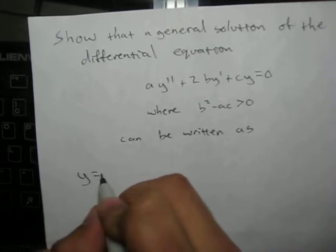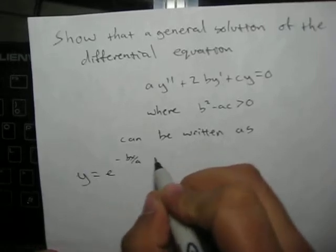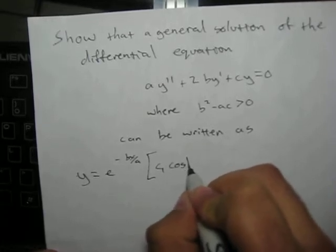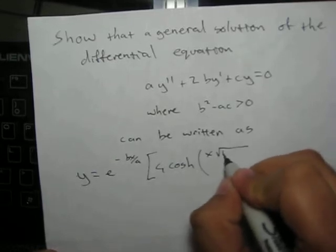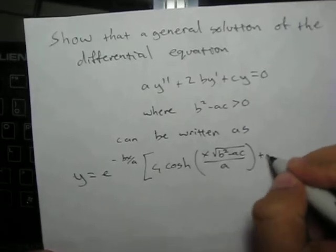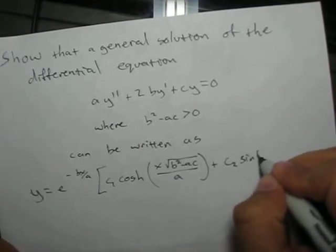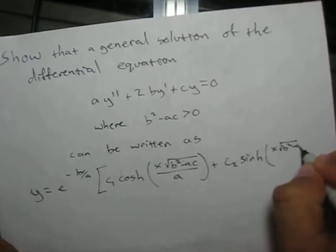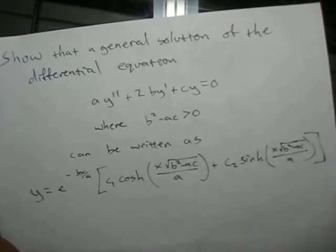y equals e to the (-bx/a) times the quantity c1 cosh(x * sqrt(b²-ac) / a) plus c2 sinh(x * sqrt(b²-ac) / a).